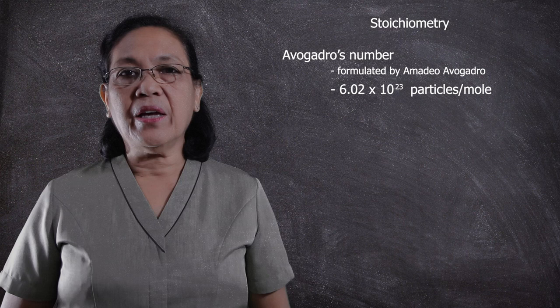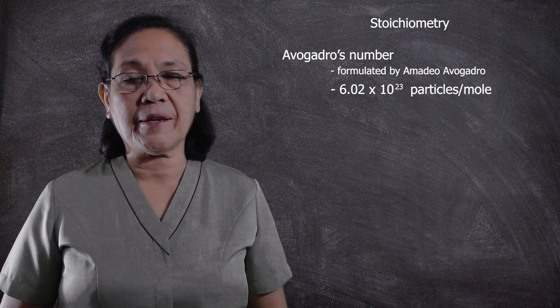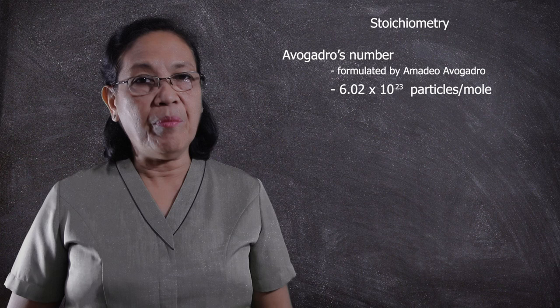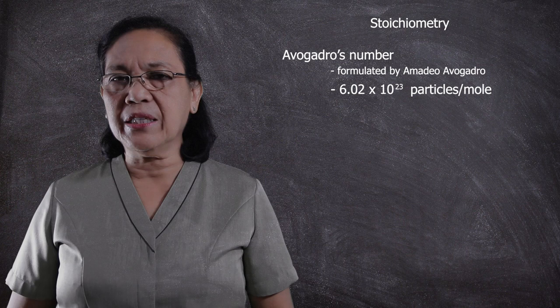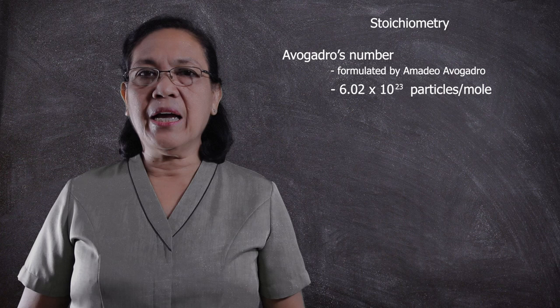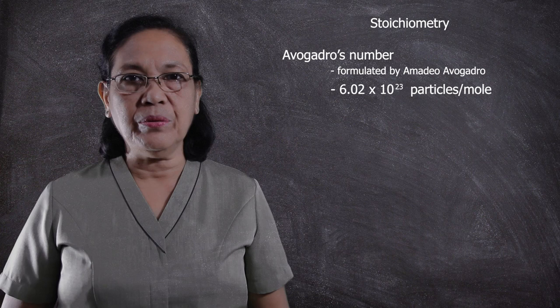In every mole of a substance, there are 6.02 times 10 to the 23 particles. For example, if we want to get the number of molecules in one mole of water, in one mole of water it follows that there are 6.02 times 10 to the 23 molecules, because according to Avogadro, for every mole of a substance, there are 6.02 times 10 to the 23 molecules or particles.